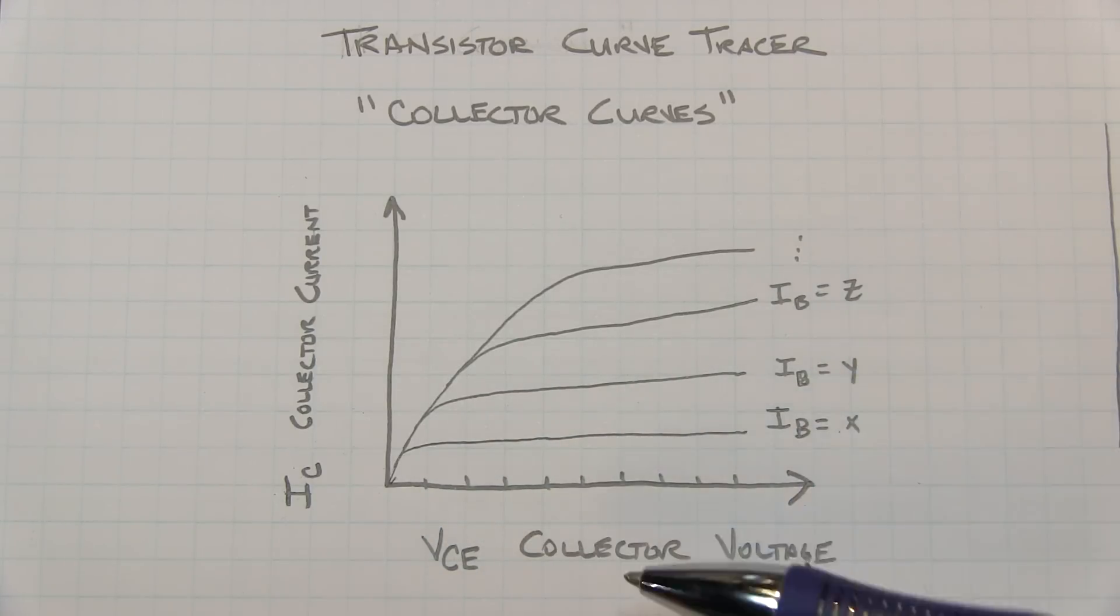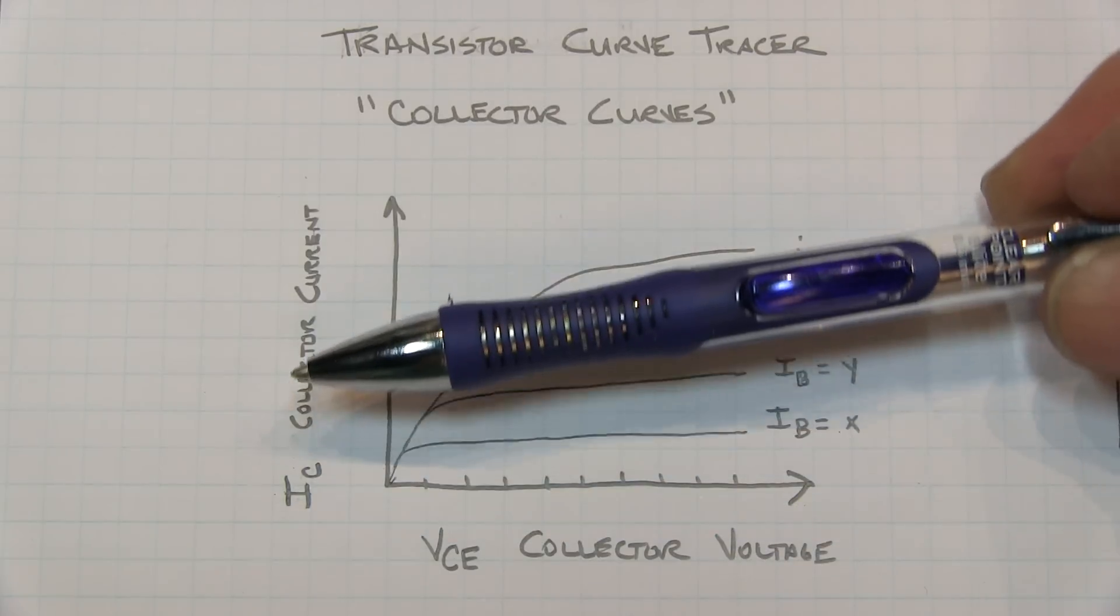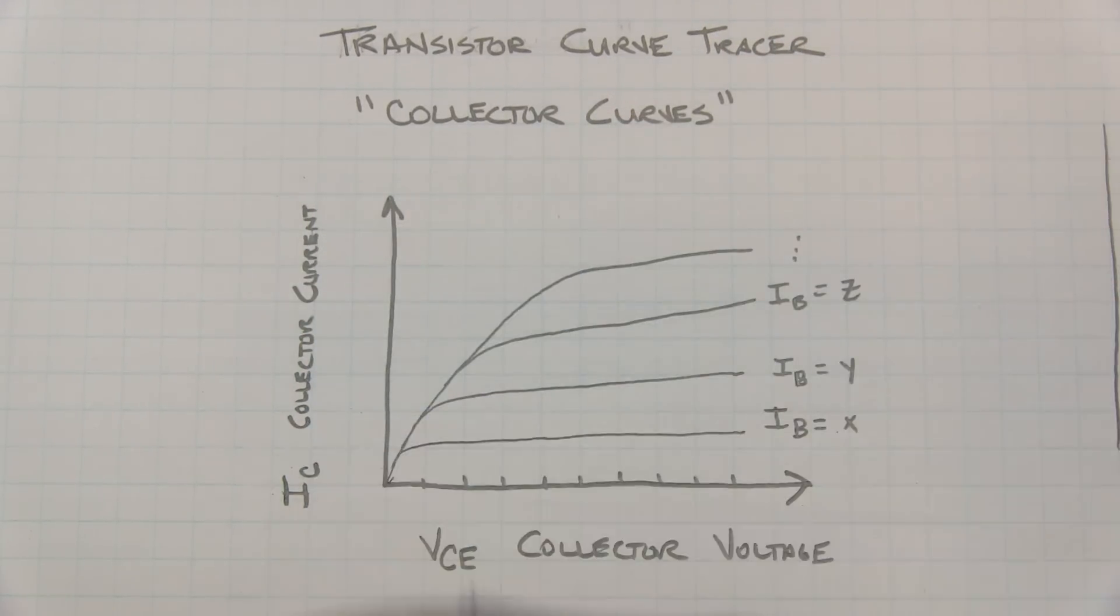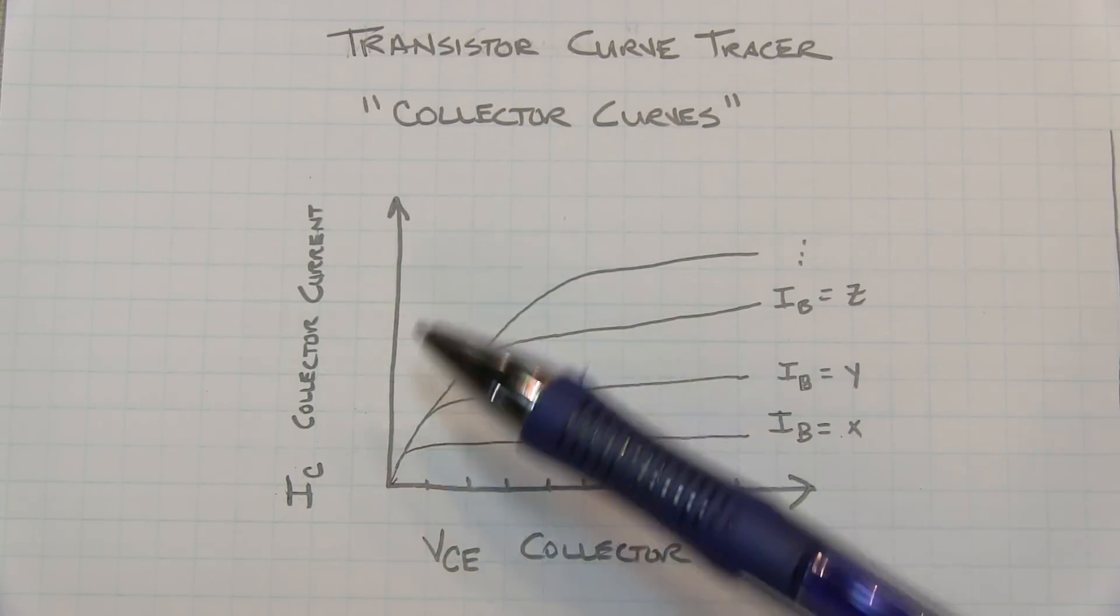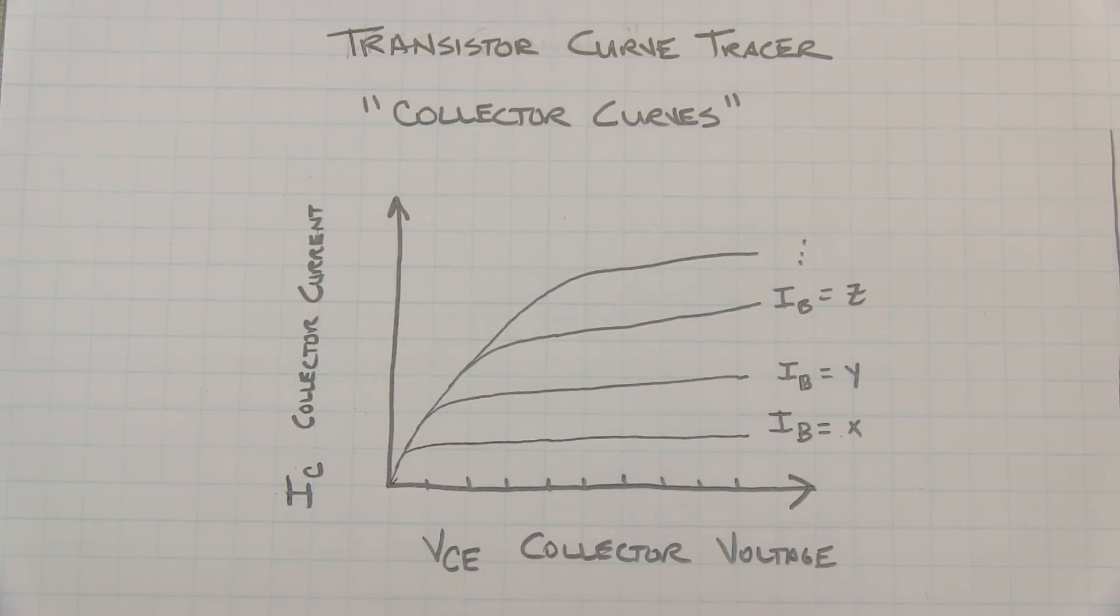Typically, at the higher base currents, you're going to start to see a tilt in this waveform as you go up due to an effect called the early voltage. But it's just this set of curves that we want to duplicate with a very simple rudimentary curve tracer.